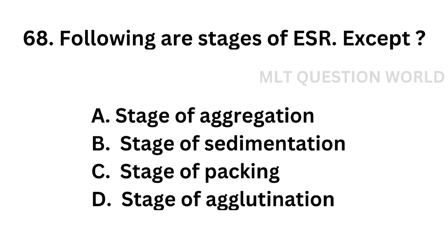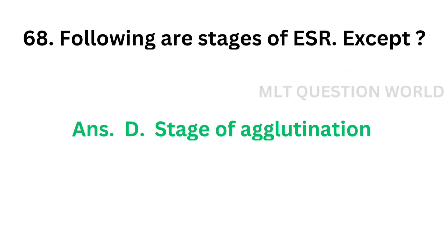Question number 68: The following are the stages of ESR except — Option A: Stage of aggregation, Option B: Stage of sedimentation, Option C: Stage of packing, Option D: Stage of agglutination. The correct answer is Option D, Stage of agglutination. The other three — aggregation, packing, and sedimentation — are the stages of ESR, but there is no stage of agglutination.